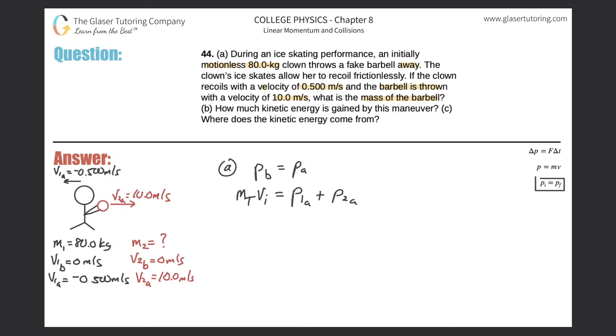remember the two objects will now be separated. So I have the momentum of the clown after the pushing off, plus the momentum of the barbell after. So mt times vi will equal m1 v1a plus m2 v2a. And what are we after here? We are after the mass of the barbell.